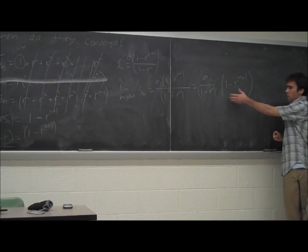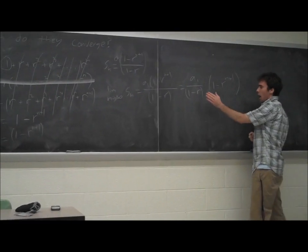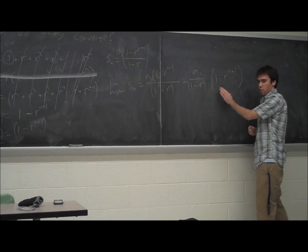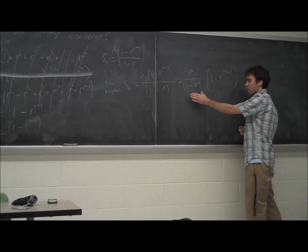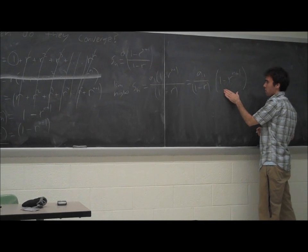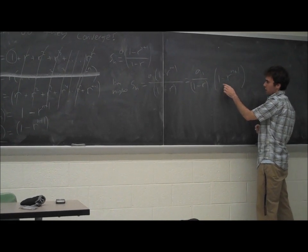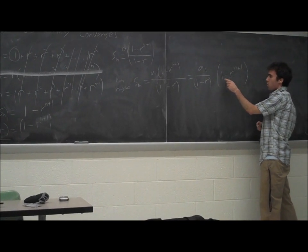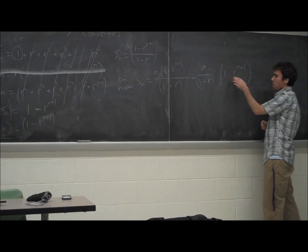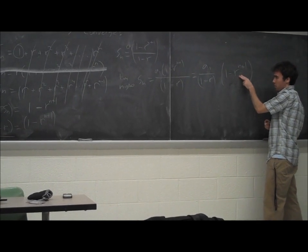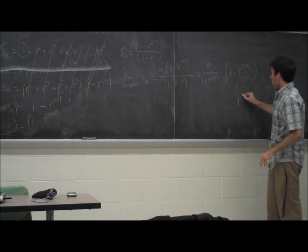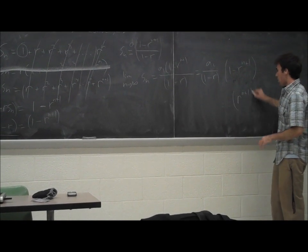So the question is, when does this converge, right? Because both of these need to converge, the whole thing to converge. We've already stated that this converges. When does this converge? Well, if we look at this, again, we can split up into small cases. 1 will always converge. So if this converges, then this must converge, right? So we look at R to the n plus 1. When will this converge?